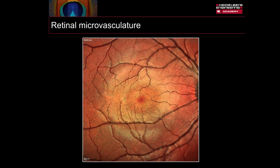Evidence of this can be seen in a multicolour image. The retinal arterioles appear as large vessels which are pale in colour, denoting they contain oxygenated blood. The retinal venules are larger still in diameter and have a darker colour, indicating the presence of deoxygenated blood.